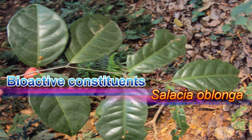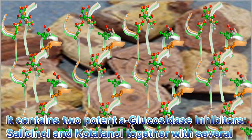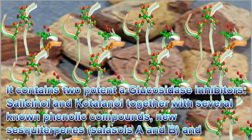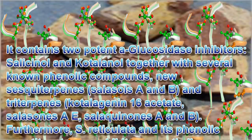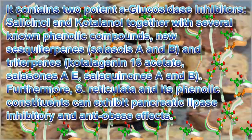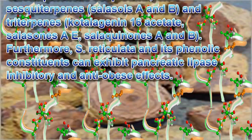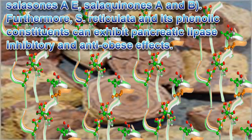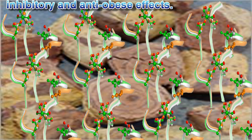Bioactive constituents of Salatia oblonga: It contains two potent alpha-glucosidase inhibitors, salicinol and kotalanol, together with several known phenolic compounds — nusasterpines, salicols A and B — and triterpenes cotylagenin-16 acetate, salicins A, and salicinones A and B. Furthermore, S. reticulata and its phenolic constituents can exhibit pancreatic lipase inhibitory and anti-obese effects.